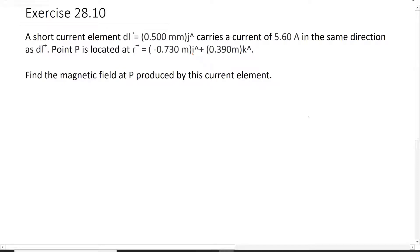This is question 28.10. They give us an element at 0.5 millimeters in the y direction with the current that's also in the y direction, and they give us a new point in the x and z direction. They want the magnetic field at this point.